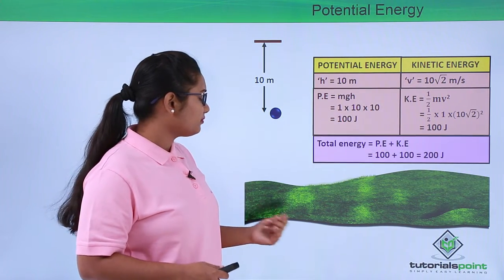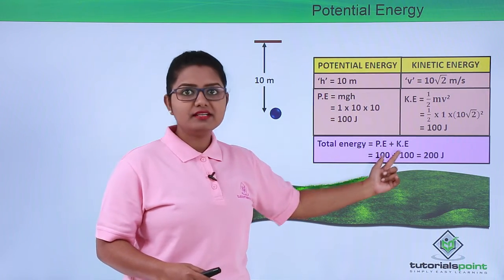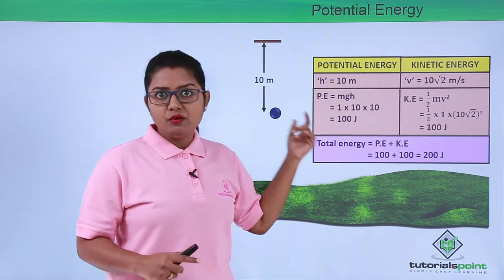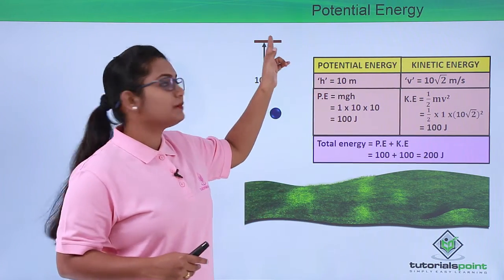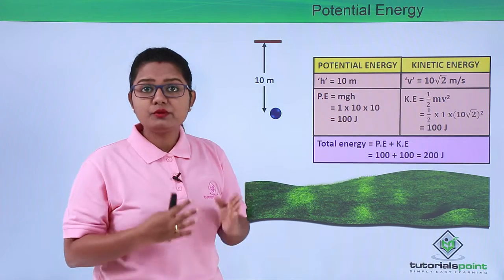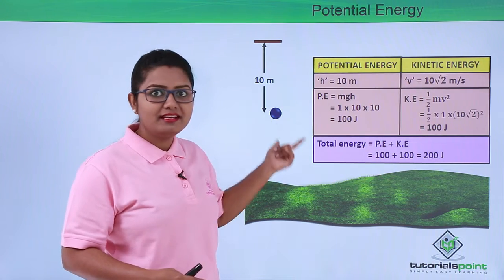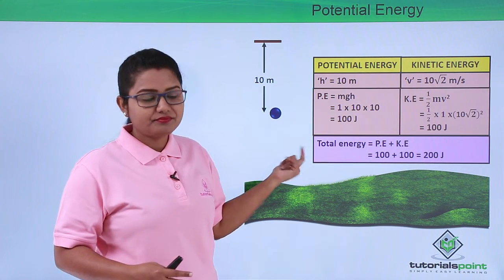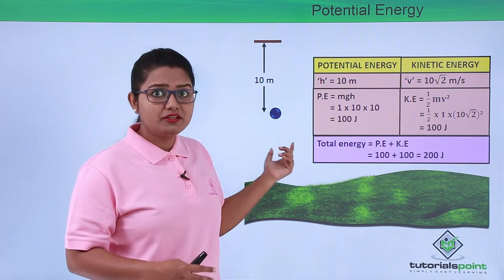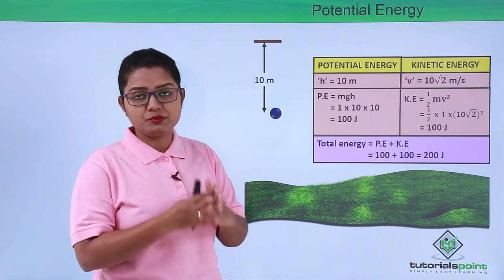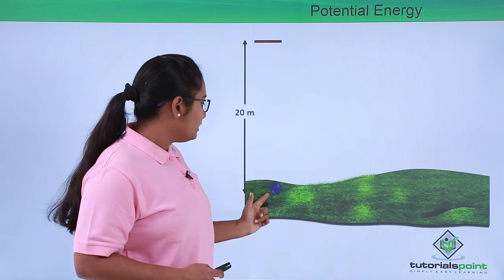In the same way, we can calculate the total energy of this ball at this place, which is potential energy plus kinetic energy: 100 plus 100, that is 200 joules. We must remember that in the previous case when the ball was at rest at its initial height, the total energy was also 200 joules. So the total energy has not changed when the ball has fallen to 10 meters. The total energy of this body was 200 joules then, and it is 200 joules now.